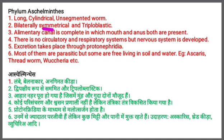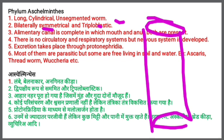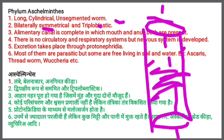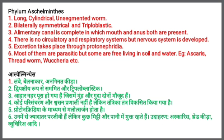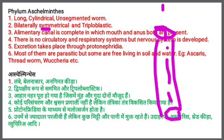The second point is they are bilaterally symmetrical and triploblastic. Bilaterally symmetrical means that if we divide the body of this worm into two parts, both halves will be equal — the two parts are symmetrical to each other.